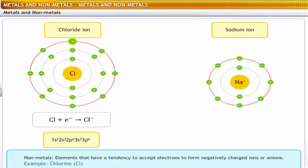A chloride ion has an electronic configuration of 1s², 2s², 2p⁶, 3s², 3p⁶.